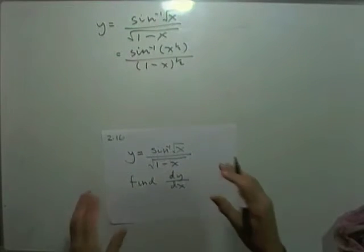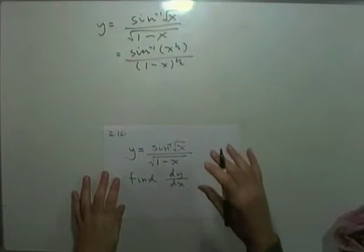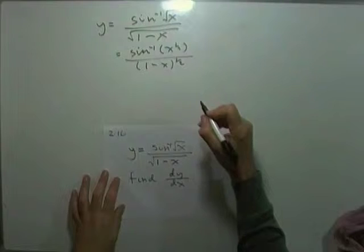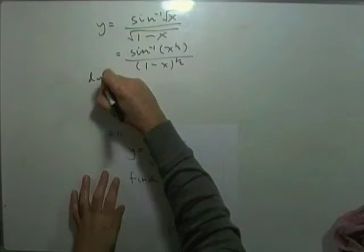Quite often not necessary just with square roots, because square root is quite easy to manage. But you would certainly do that if it was any other index apart from that. Then, quotient rule.